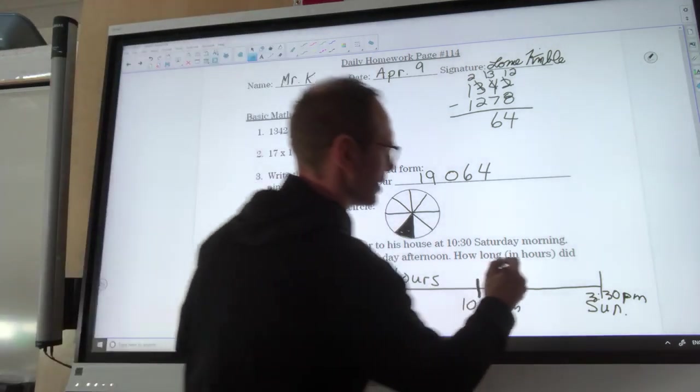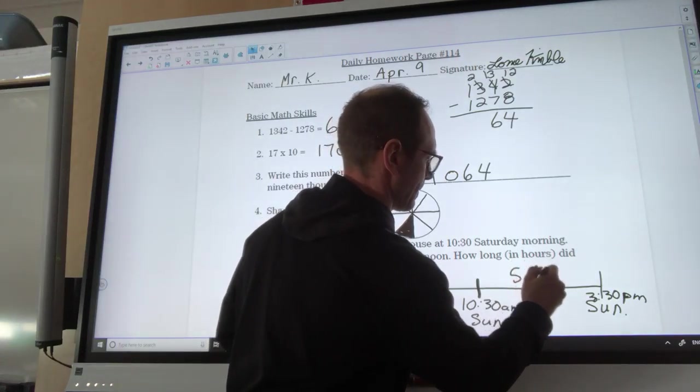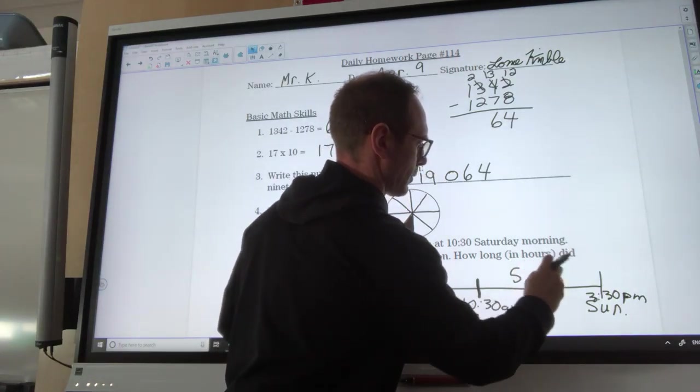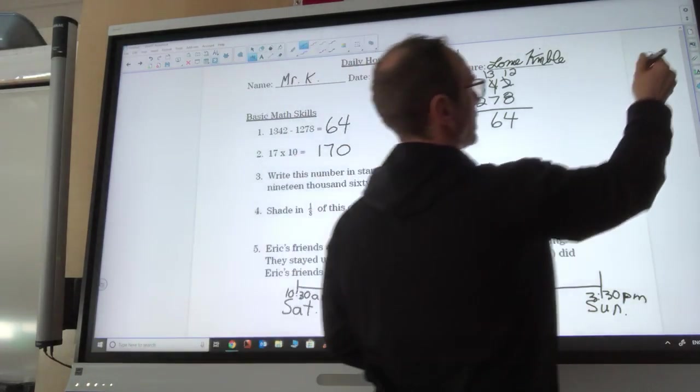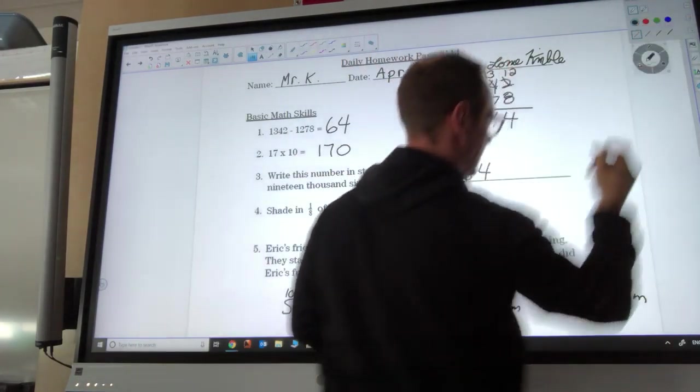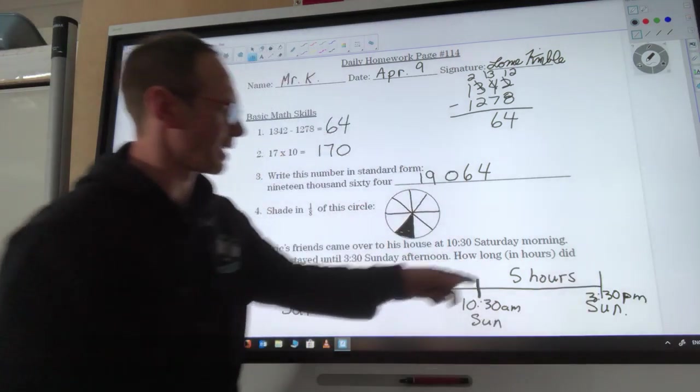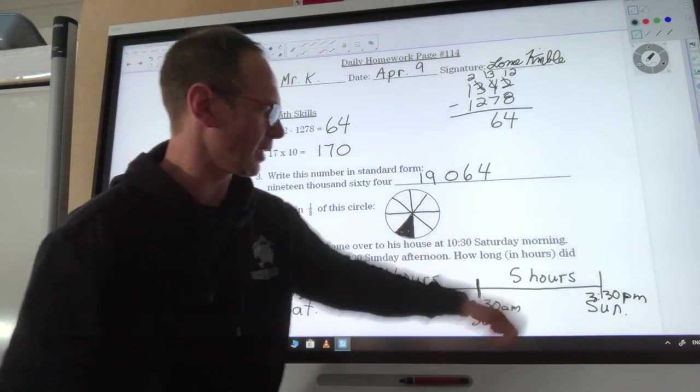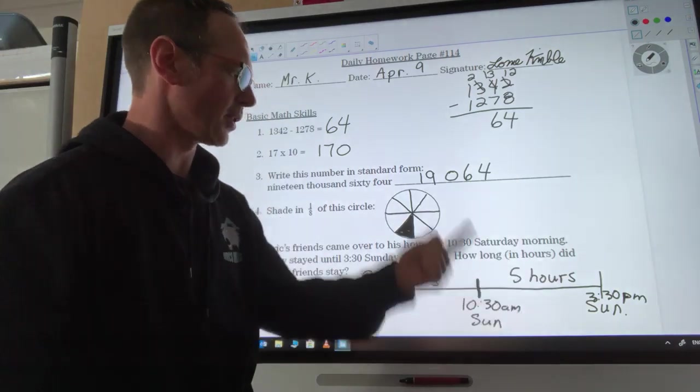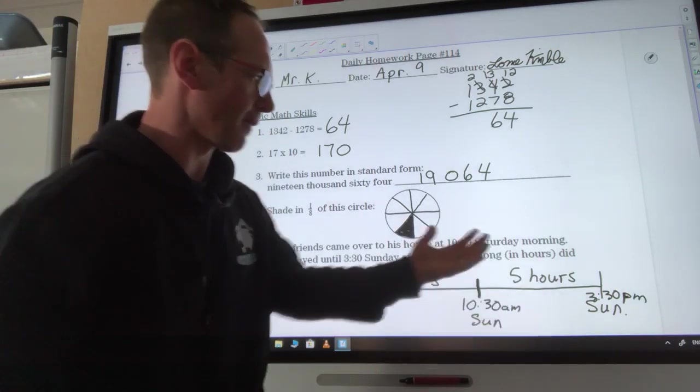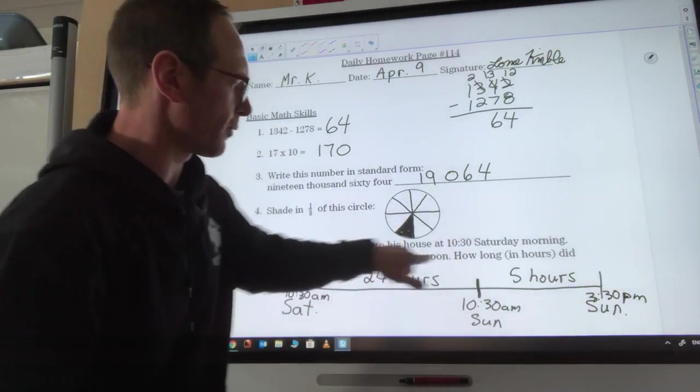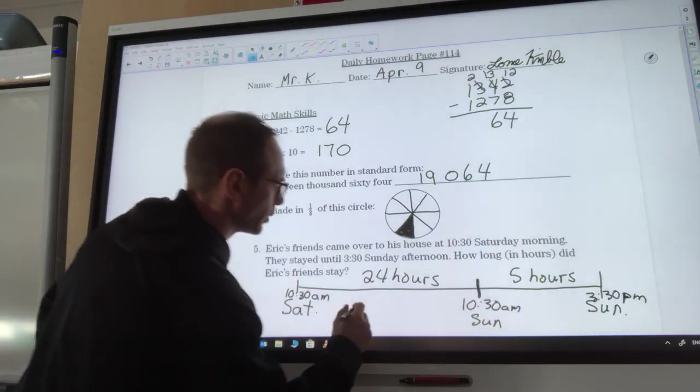Let's just double check that I did that right. The smart board does this to me guys, where it just changes the size of the pen sometimes. Let's just double check that it is five hours from 10:30 to 3:30. So 11:30, 12:30, 1:30, 2:30, 3:30. Right, five hours. So now we have 24 hours plus five hours, which would give us 29 hours total.